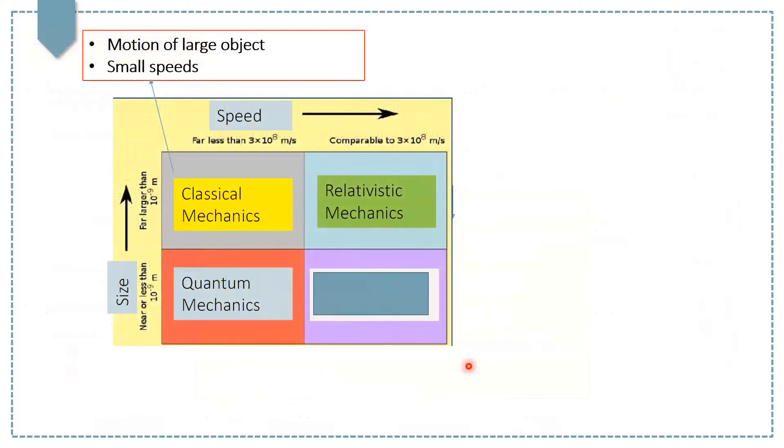Here is a diagram showing how we can differentiate between different mechanics. For example, classical mechanics deals with the motion of large objects and those larger objects have small speeds.